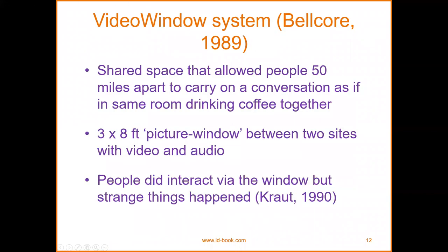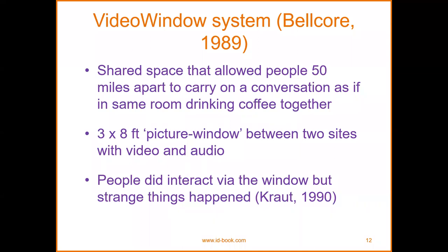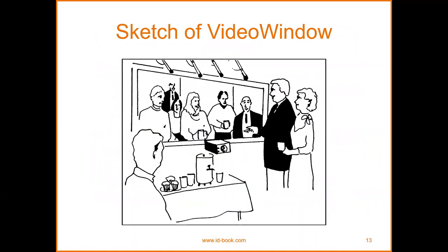The video window system — Bell in 1989 — shared a space that allowed people 50 miles apart to carry on a conversation as if in the same room, drinking coffee together. It provided a 3x8 picture window between two sides with video and audio. People did interact via the window, but strange things happened. The sketch of the window was like this.